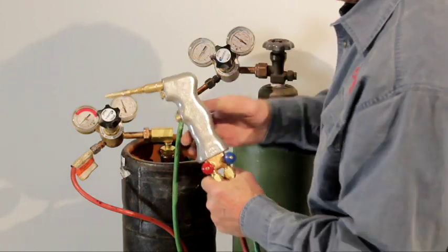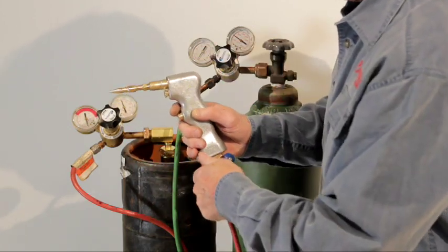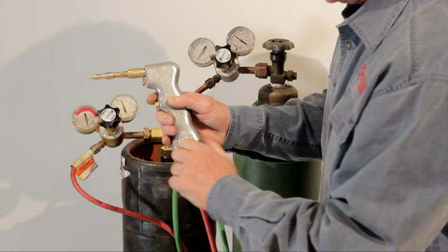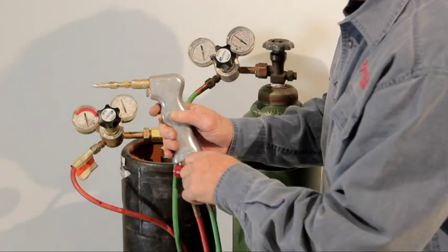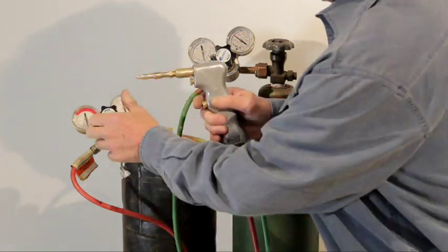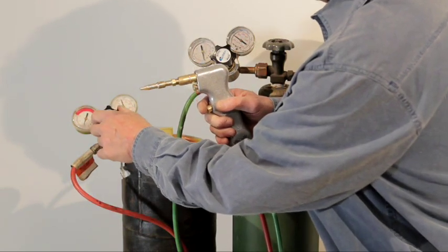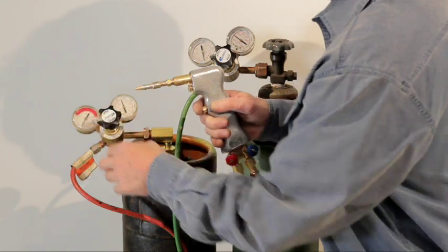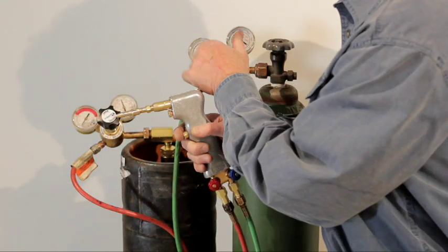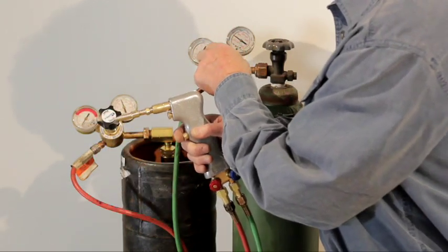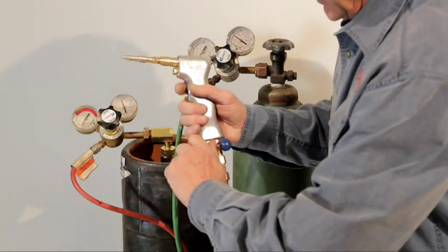Open the valves right here. All we're going to do is just bleed the line, then go back and close it. Bleed the line, go back and close it. So all I'm going to do is come over here and just run that pressure up to about five pounds on each one of them because once we open the torch up, it's going to drop back.